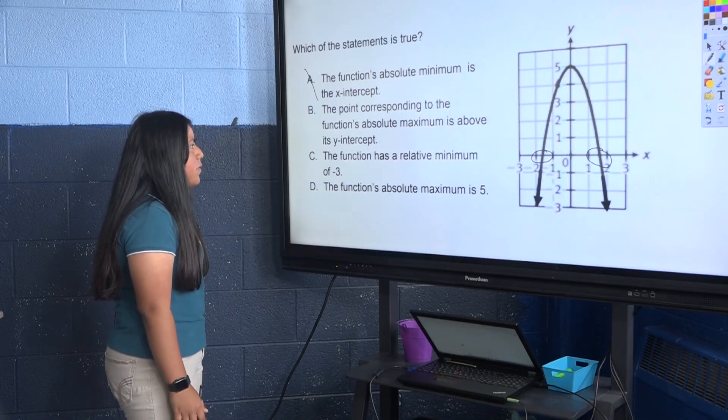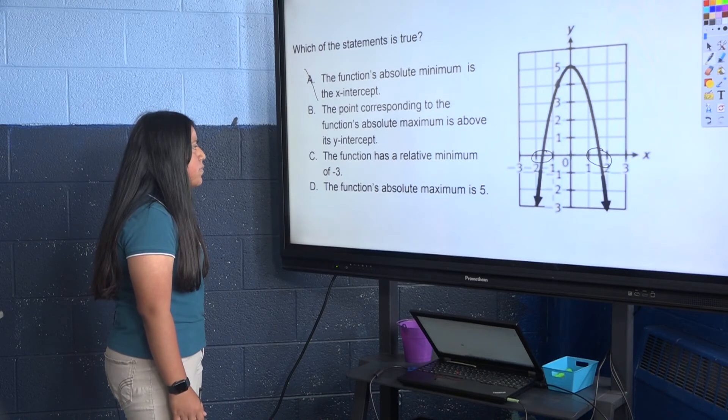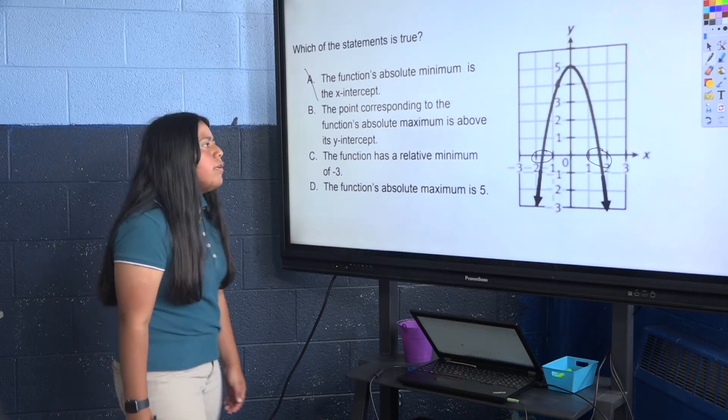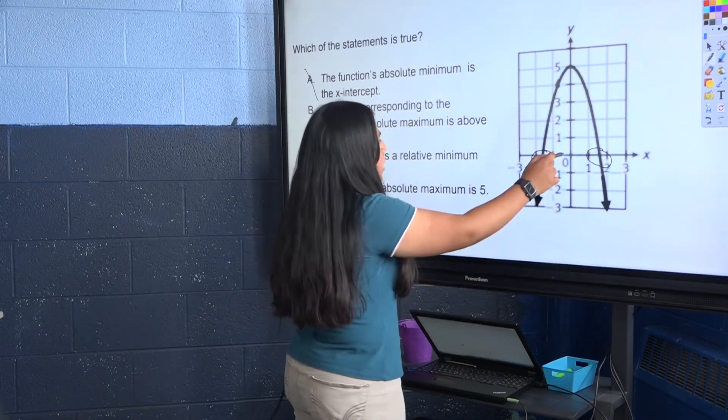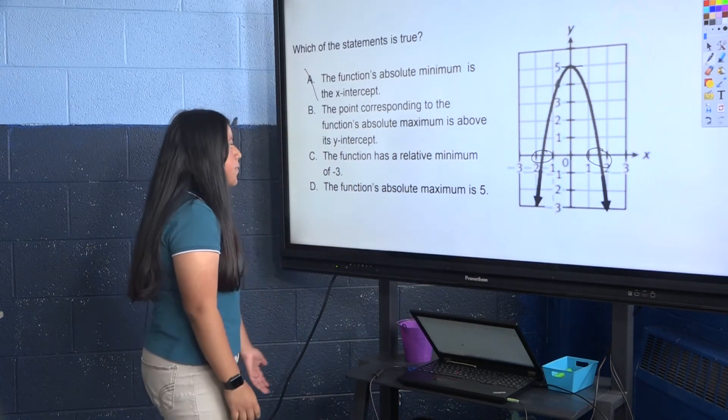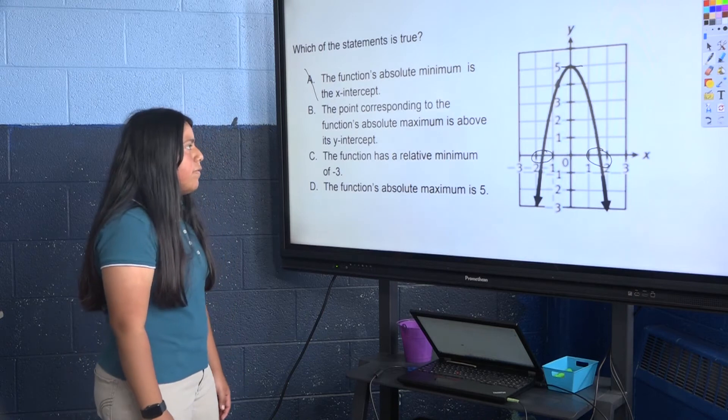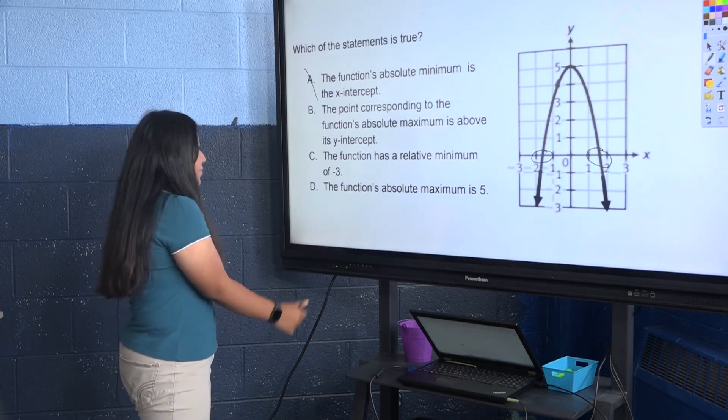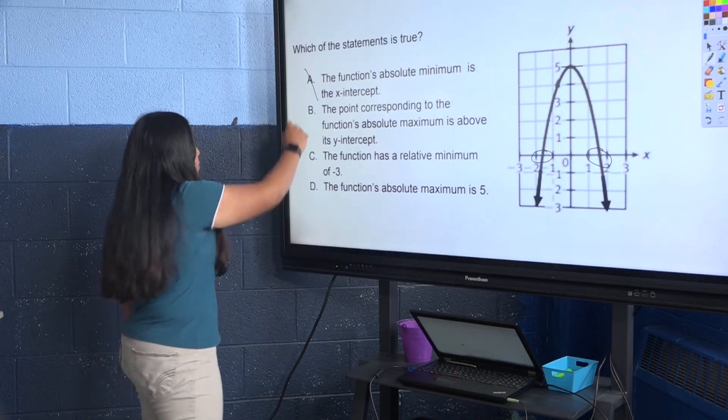B. The point corresponding to the function's absolute maximum is above its y-intercept. The y-intercept would be when x is 0. So our y-intercept would be 5, and that is the absolute maximum. It does not go above the y-intercept. So we can rule B out.